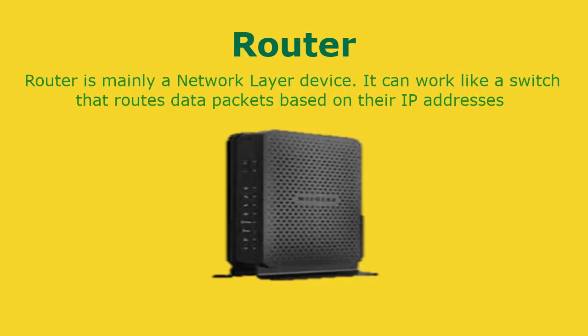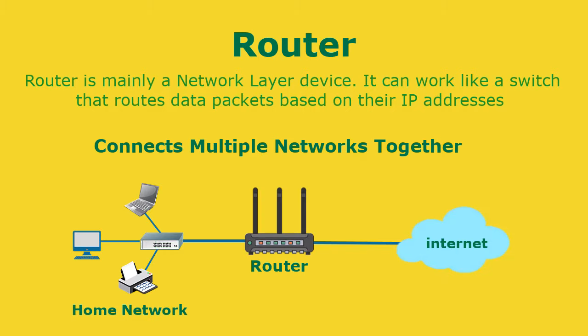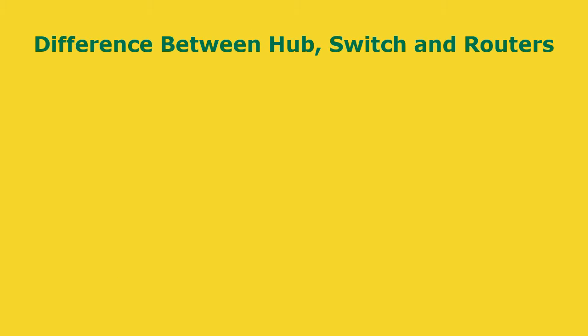Next is the router, which is the smartest or most complicated of the three. A router is mainly a network layer device. It can work like a switch by routing data packets based on their IP addresses. It also maintains a dynamically updating routing table, based on which it makes decisions on routing data packets. More than the switch, the router connects multiple different networks together — normally connecting LANs with the internet or other WANs. It also has the capability to repackage data and send it over another network.